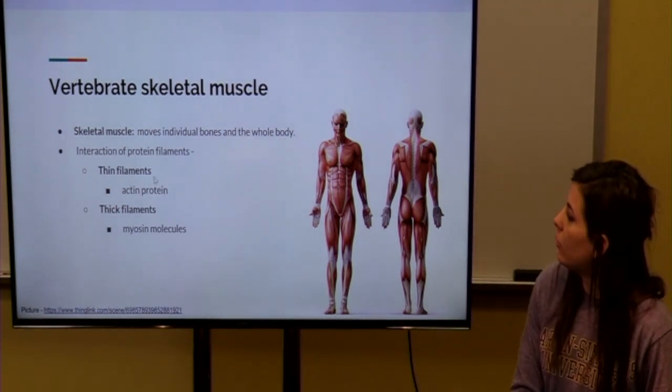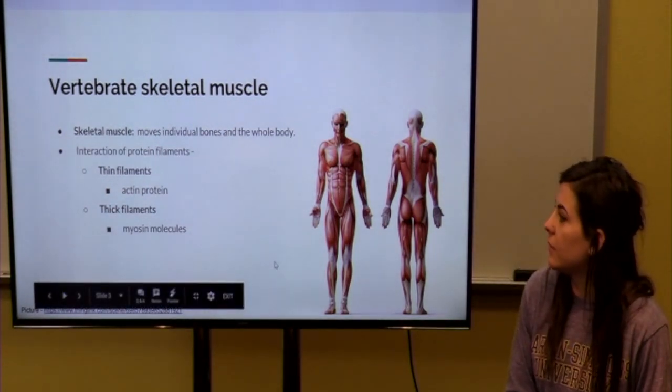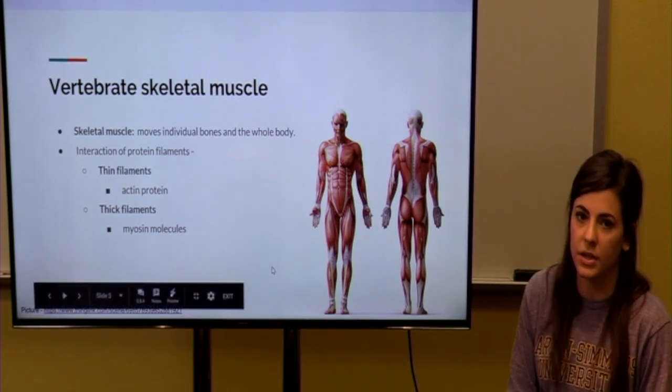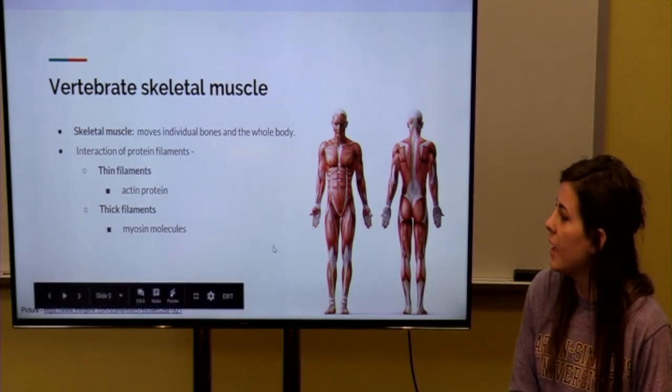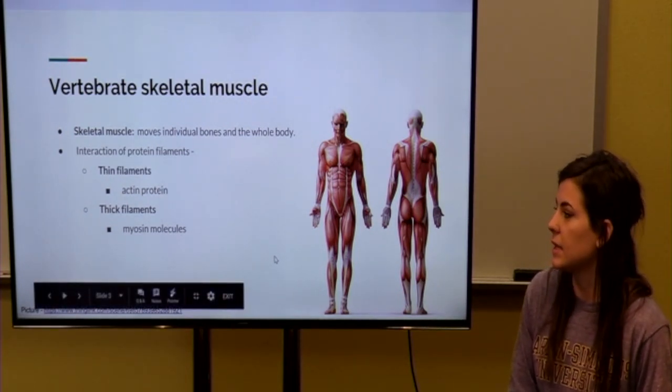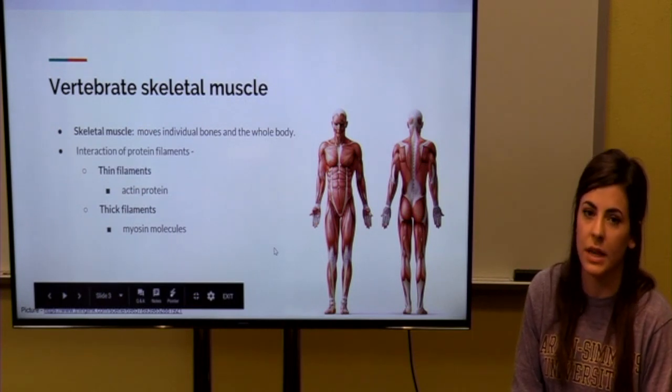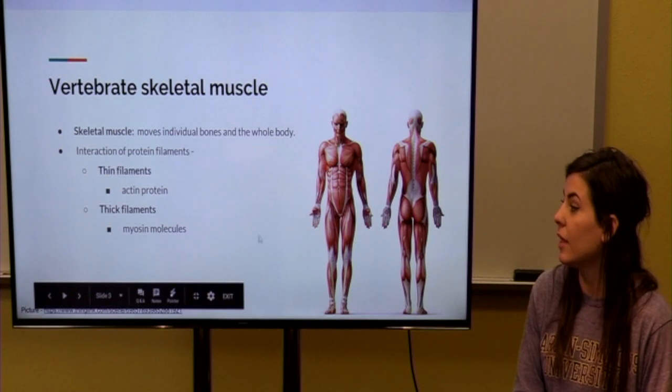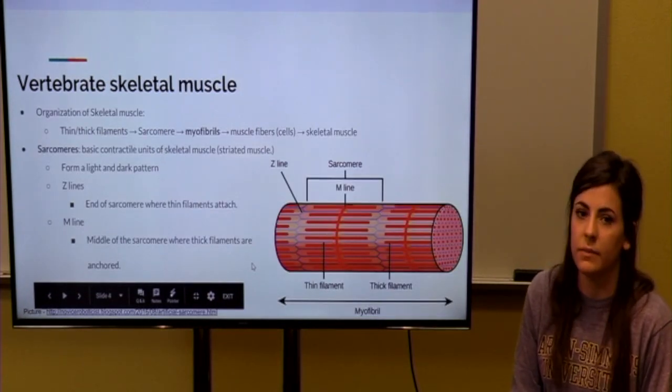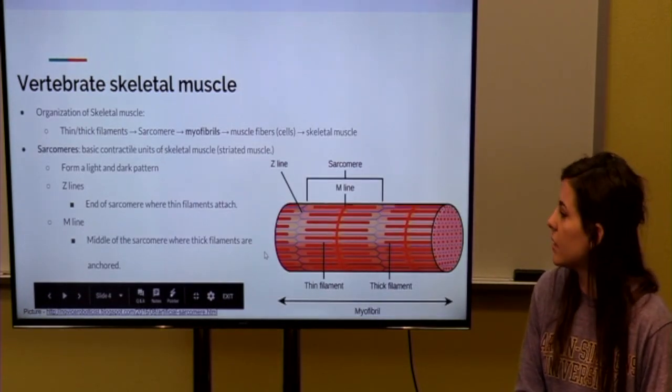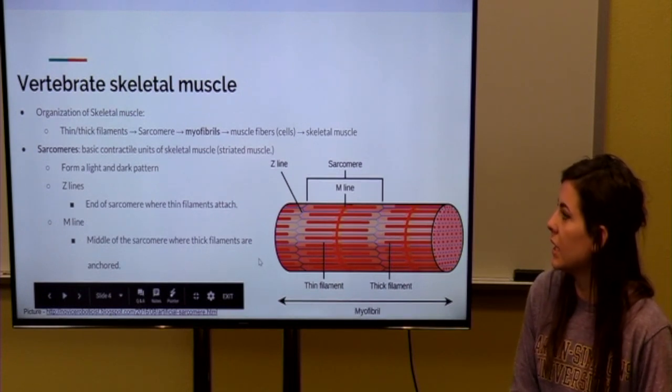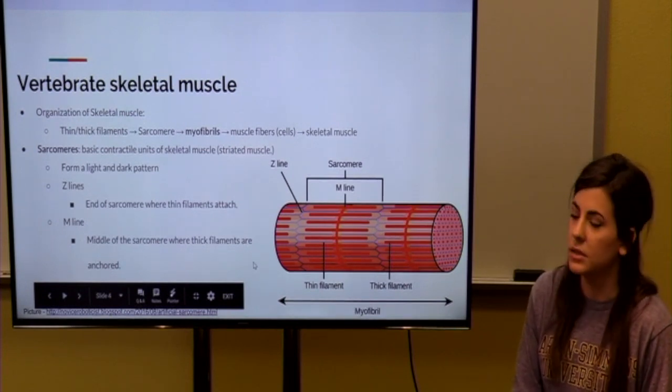Okay, so the way our skeletal muscle functions is the interaction of protein filaments. These are thin filaments and thick filaments. Thin filaments are the protein called actin and the thick filaments are made up of molecules called myosin.